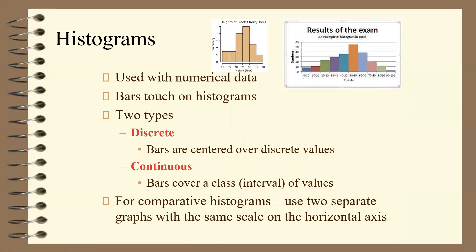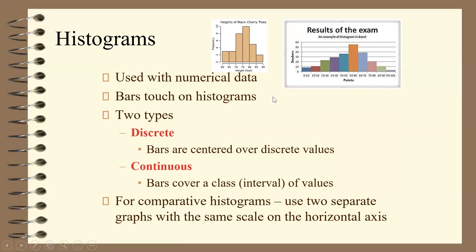Histograms are used with numerical data, and the bars touch on histograms — this is a key difference from bar graphs. The histogram deals with numbers on a number line, which is why the bars are connected. The left side is lower than the right-hand side. There are two types: discrete, where bars are centered over discrete values, and continuous, where bars cover a class or interval. Most often a histogram will use intervals — for example, zero to ten, how many students? Ten to twenty, how many students? For comparative histograms, use two separate graphs with the same scale on the horizontal axis.